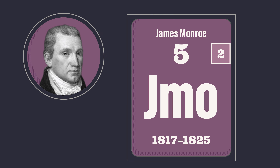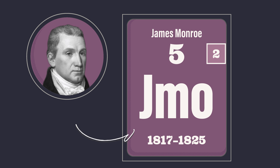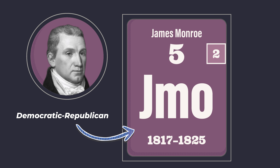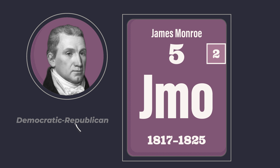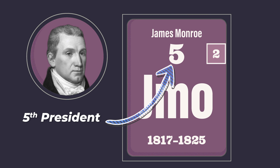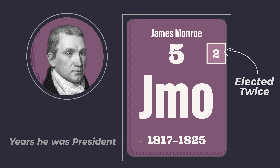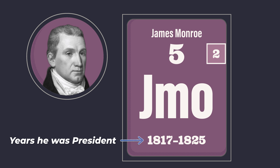Let's take a closer look at James Monroe's presidential cell. Monroe's cell is colored purple, indicating that he was a member of the Democratic Republicans. The number five in the top center of the cell indicates that Monroe was the fifth president. The number two on the top right indicates that James Monroe was elected twice to the presidency. Monroe's cell also displays the years that he served as president, from 1817 to 1825.